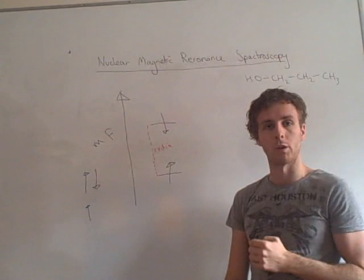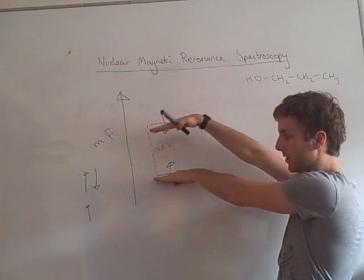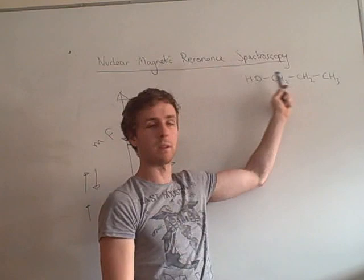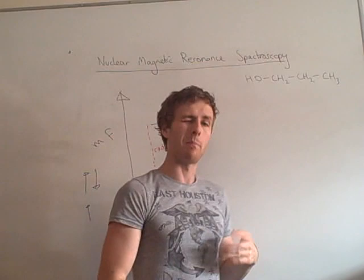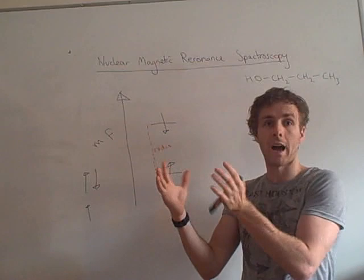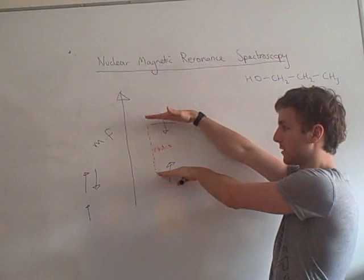However, the exact distance between this low energy state and this high energy state is determined by the environment that your nucleus is in. So, for example, we've got three different carbon environments here. The environment just means what is it surrounded by, what is it bonded to. And basically, the way it works is the more electron density you have around your nucleus, the more your carbon nucleus is shielded from a magnetic field, and therefore this distance is smaller.